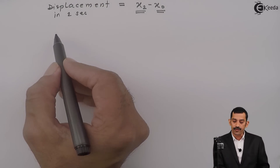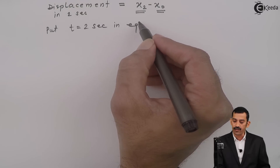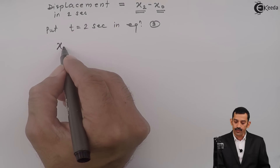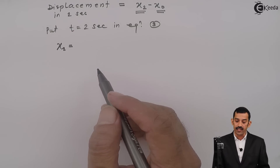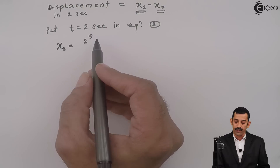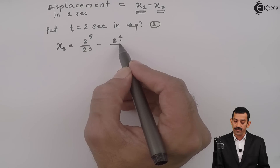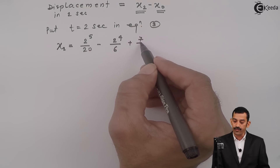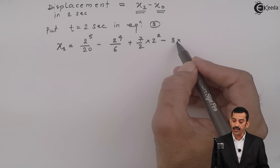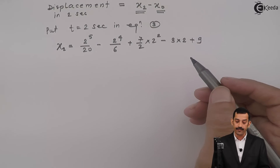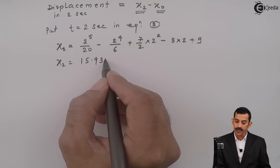Substituting t = 2 seconds in Equation 3 for position: x₂ = (2⁵/20) - (2⁴/6) + (7/2)(2²) - 3(2) + 9. Using a calculator, this answer comes out to be 15.93 meters, which represents the position at t = 2 seconds.